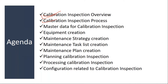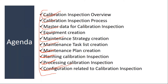Then we will see the calibration inspection process, then the master data required for calibration inspection, then equipment creation in the system, then maintenance strategy, maintenance task list, and maintenance plan creation. Then how the planning of this calibration inspection activity happens, how the processing of the calibration inspection takes place, and finally configuration related to calibration inspection. These are the topics we will be covering.